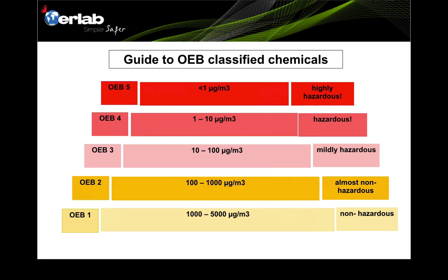As you can see here, OEB 1 is non-hazardous — an operator can basically inhale up to a maximum of 5,000 micrograms per cubic meter of this powder. And you can see that from level 4 and level 5, especially level 5 which is highly hazardous, an operator should not inhale more than 1 microgram per cubic meter. So if a chemical is within OEB 5, that chemical powder is highly toxic and hazardous.